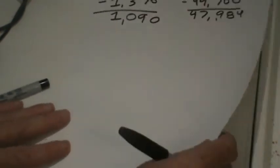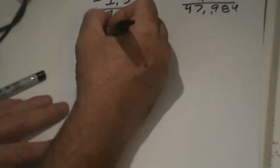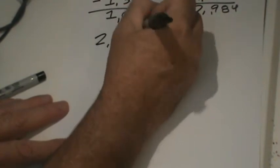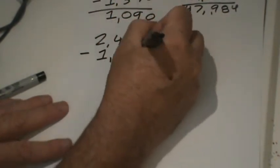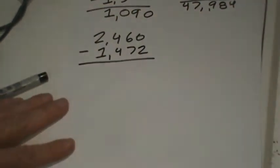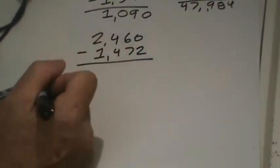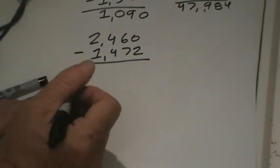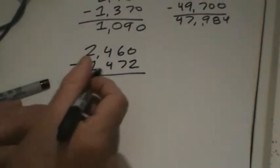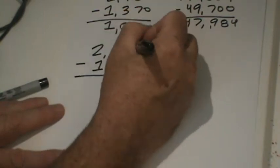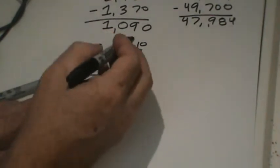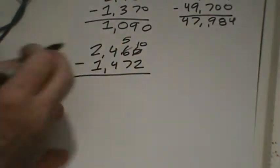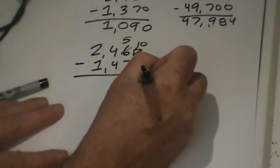We'll go to problem D: 24,660 minus 1,472. I can't take two ones away from zero — just cannot happen. So we're going to decompose those six tens to five tens and bring them over here, so now we have ten ones. Ten ones minus two ones is eight ones.